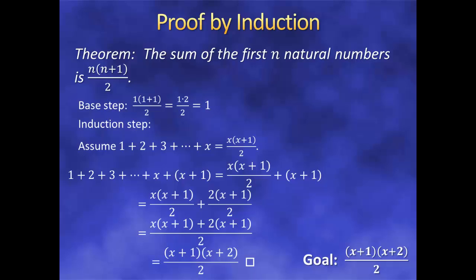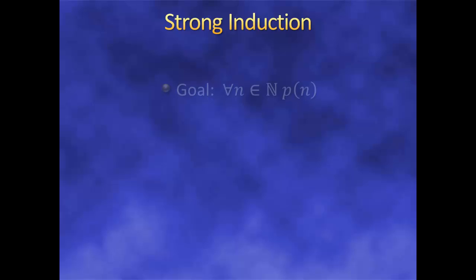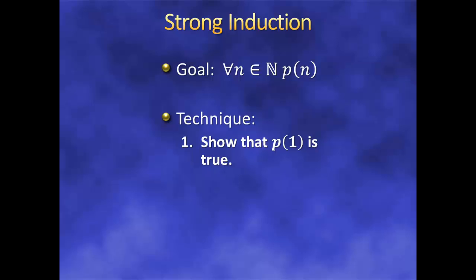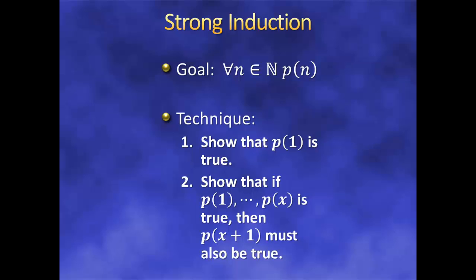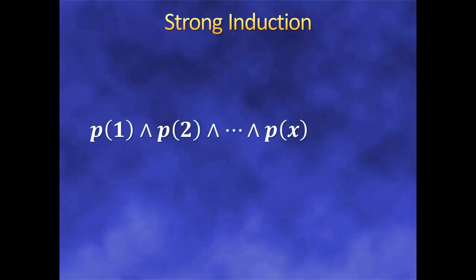Now induction is a great proof technique, but sometimes it's not quite enough. Sometimes p(x+1) doesn't just depend on p(x) being true, but perhaps p(x−1) or p(x−2). Sometimes we're not sure what it depends on, just that it has to depend on some previous case or cases. If we somehow knew that p(n) were true for all numbers from 1 to x, this wouldn't be a problem. It just so happens that there's an even better kind of induction called strong induction. When we prove something by strong induction, we still prove the regular base case, but when we do the induction step, rather than assuming that p(x) is true, we assume that p(1) all the way through p(x) is true. That way, when p(x+1) depends on something before it, we have all possible cases taken care of. This is called strong induction because it's a stronger statement — if p(n) is true for all numbers from 1 to x, it's certainly true for just x; the first statement automatically implies the second.